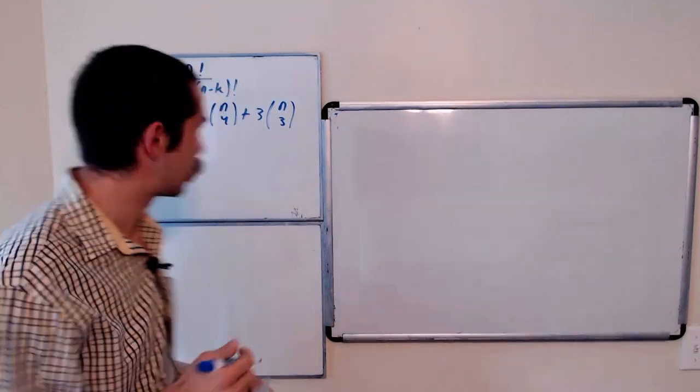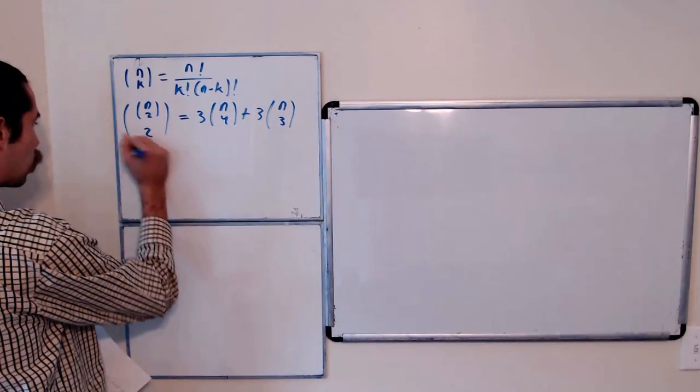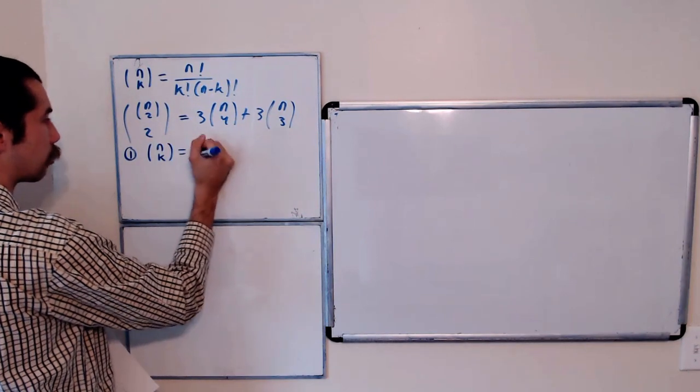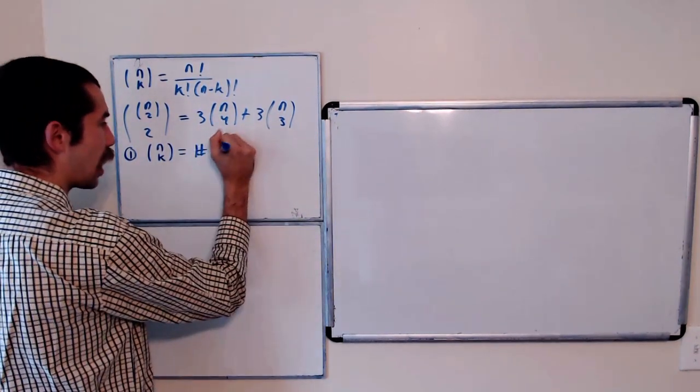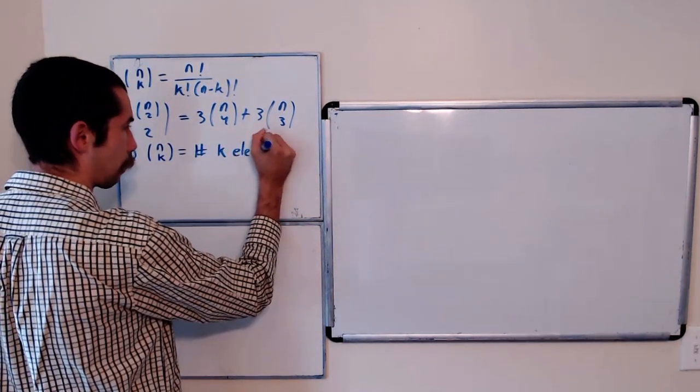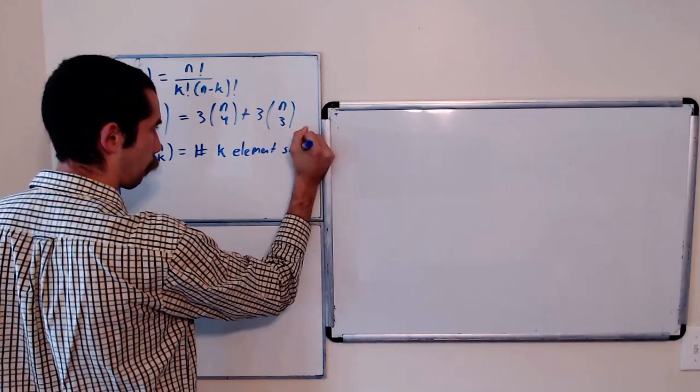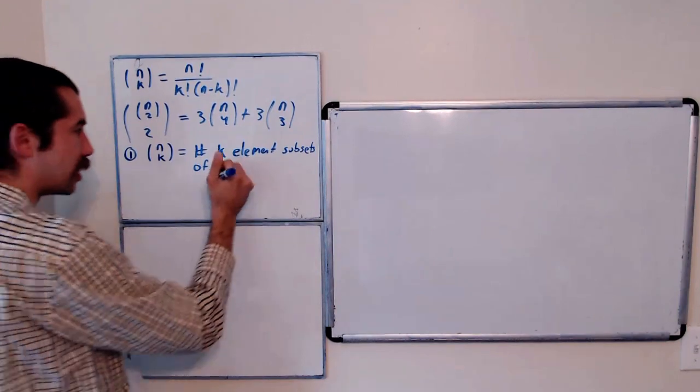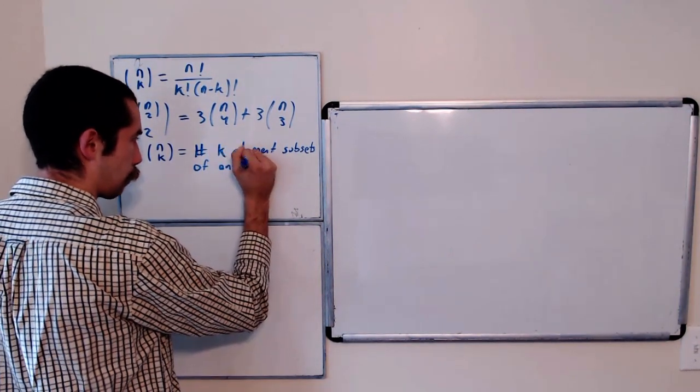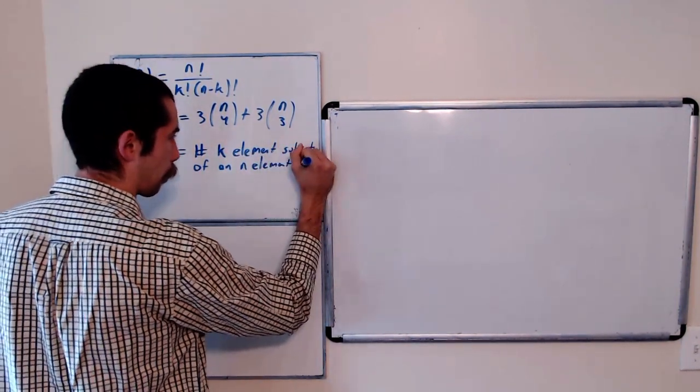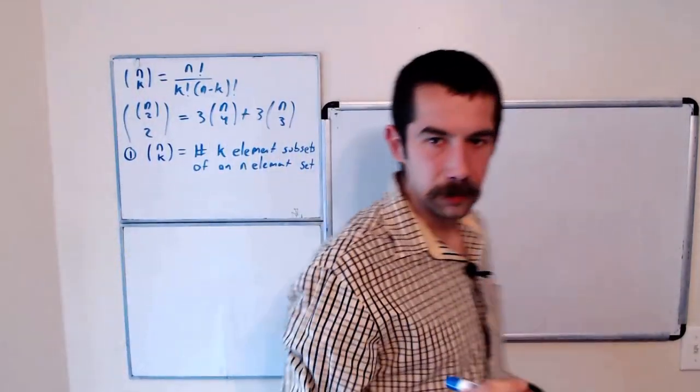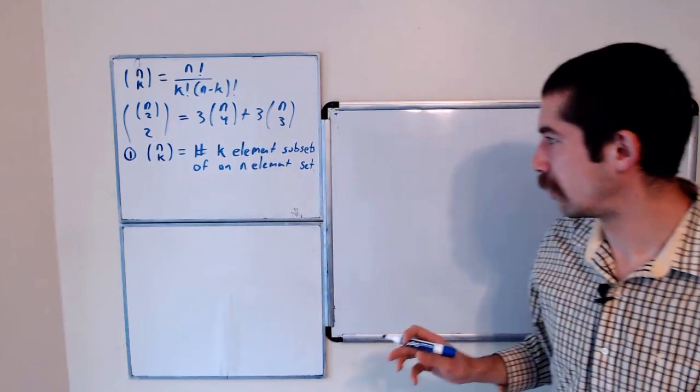So the first thing to note is that the binomial coefficient, n choose k, is equal to the number of k element subsets of an n element set.